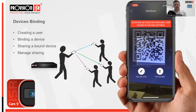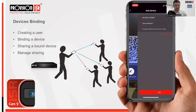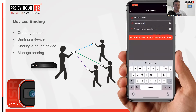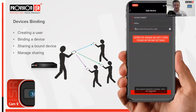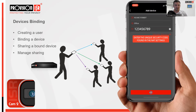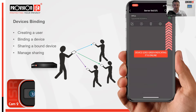Scan the device QR code and you'll be prompted to give it a recognizable name. Then enter the unique security code from the NVR network settings page. Push 'add' and you have successfully bound the device to the user account. The signal bars will turn green indicating the device is online, and you can click play to view the live feed.